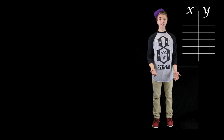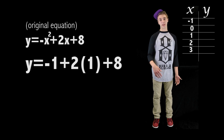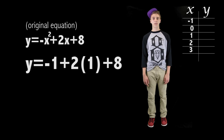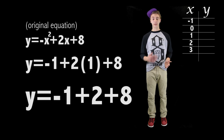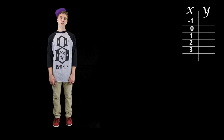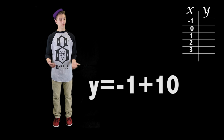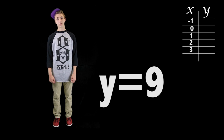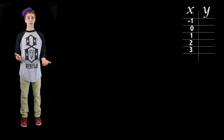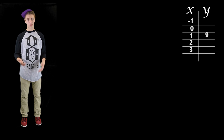Now we need to figure out what the other half of the coordinate will be. In order to do this, we need to first make a chart. To find the y, we need to substitute 1 into the original equation. When we multiply that, we get negative 1 plus 2 plus 8. When we add those together, we get negative 1 plus 10, which of course equals 9. Now we have our first coordinate points, which is our vertex.